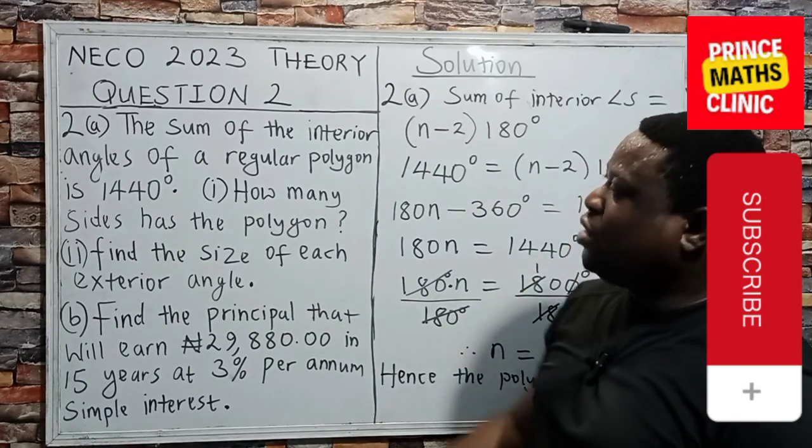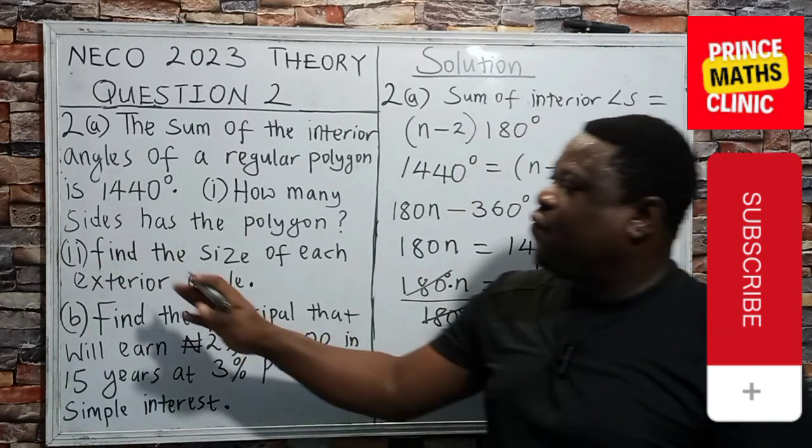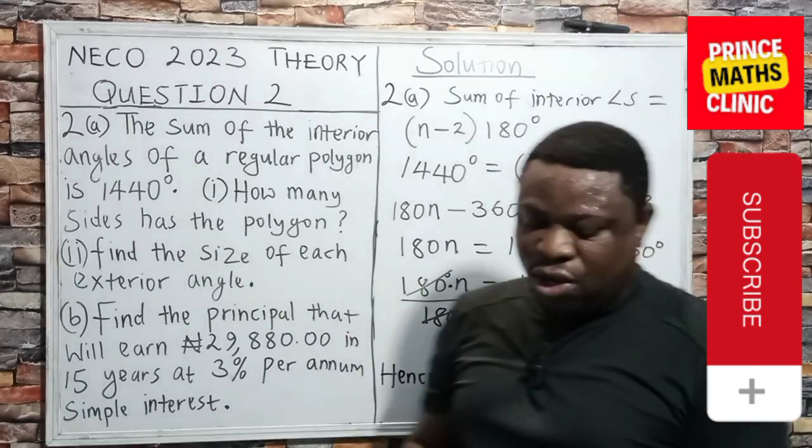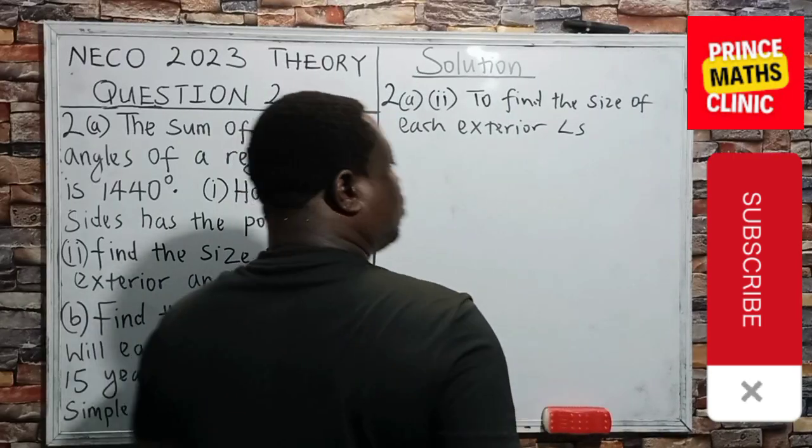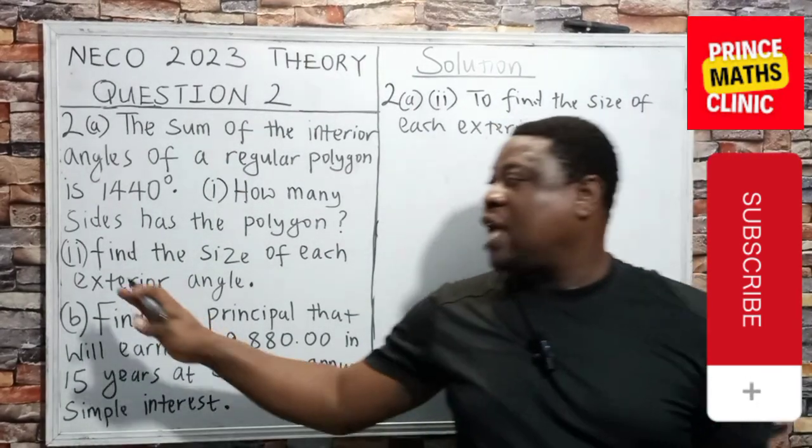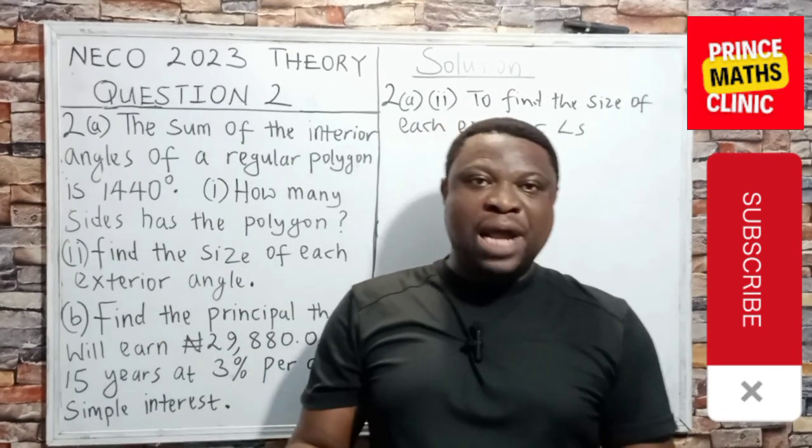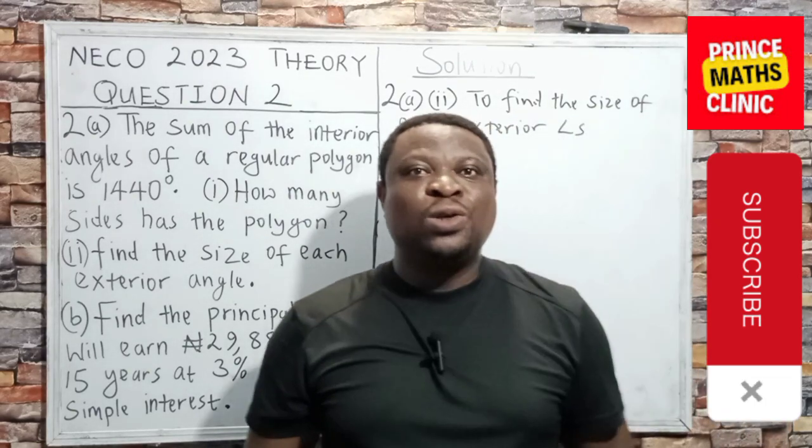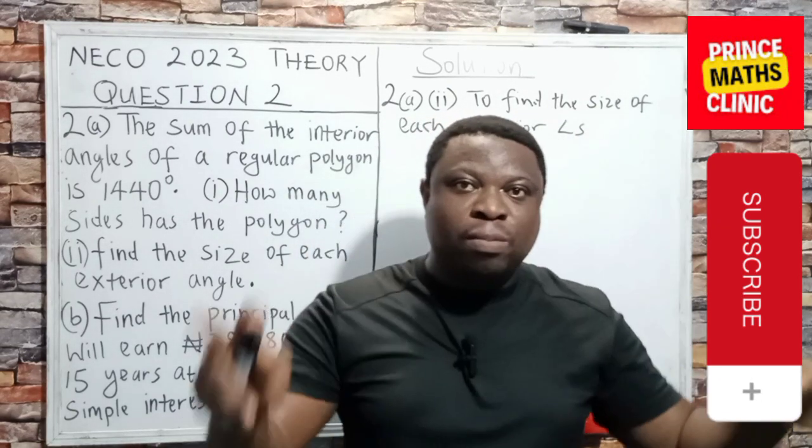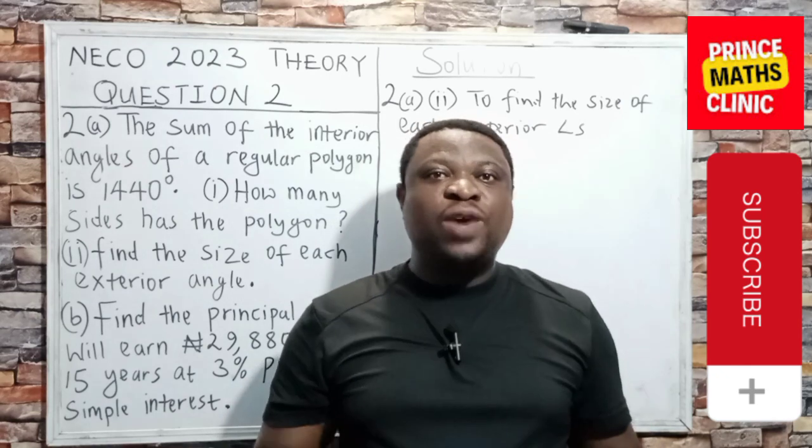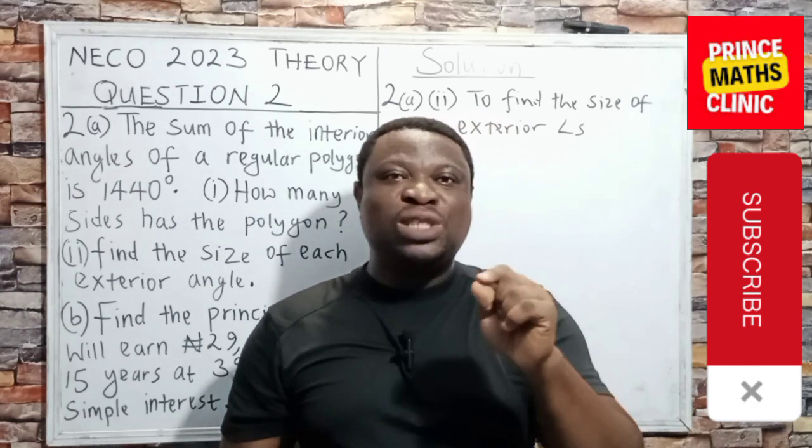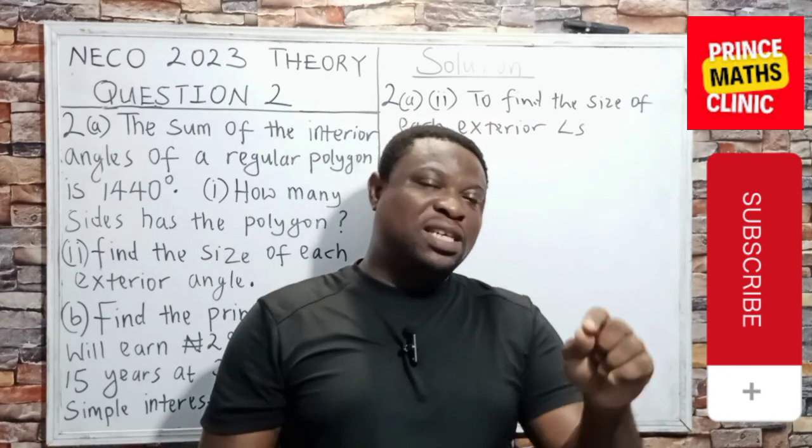Therefore, let's look at the second part of that question. Find the size of each exterior angle. Now, we want to find the size of each of the exterior angles. Remember, in my preamble, I explained to you that the sum of all the exterior angles of any regular polygon will always give me 360 degrees.